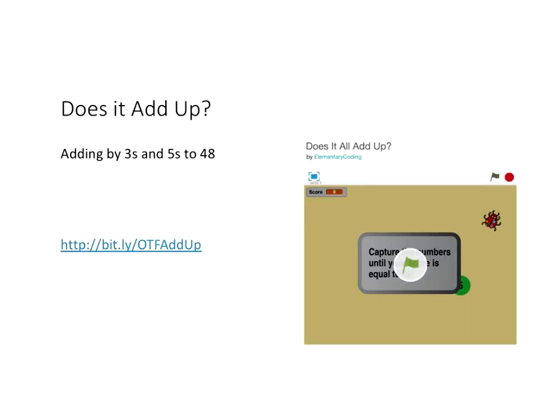The first program we're going to look at tonight works on students adding by threes and fives - they have to get to a final answer of 48 to win the game. You can change the threes, fives, or the final score of 48. This is just a starting place. I'm going to take you to the game now - Trish will put the link in the chat - you can try out the game.